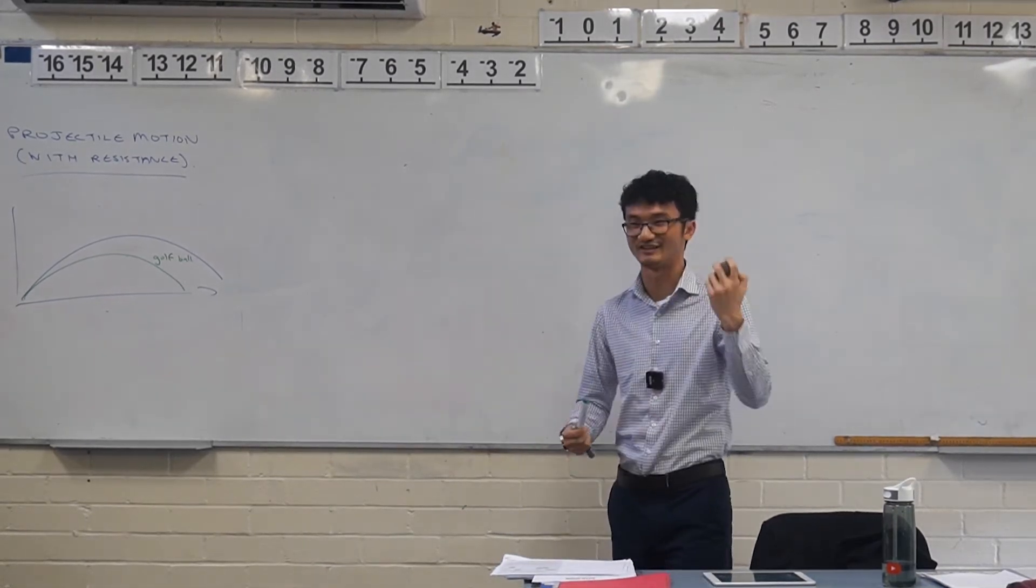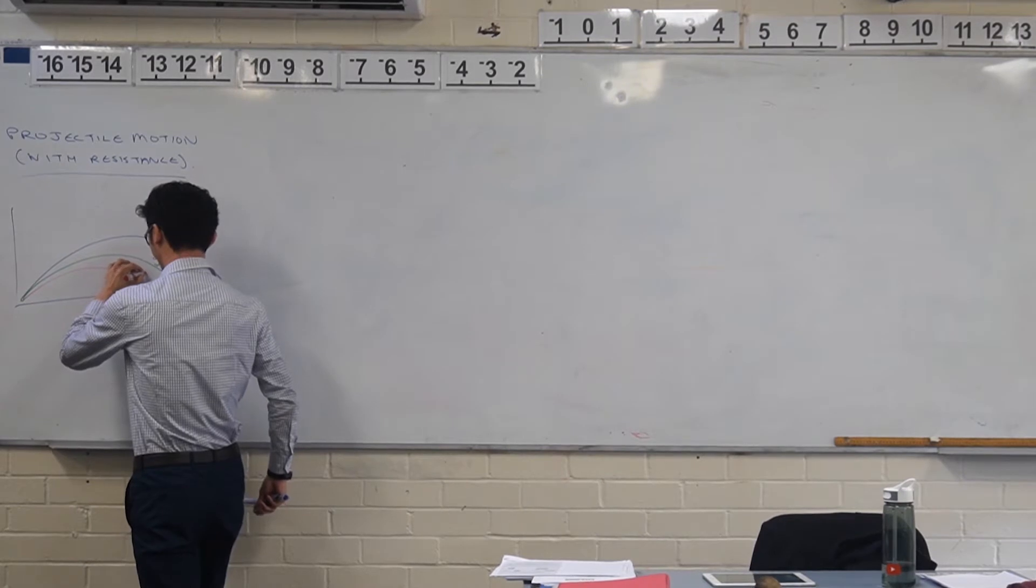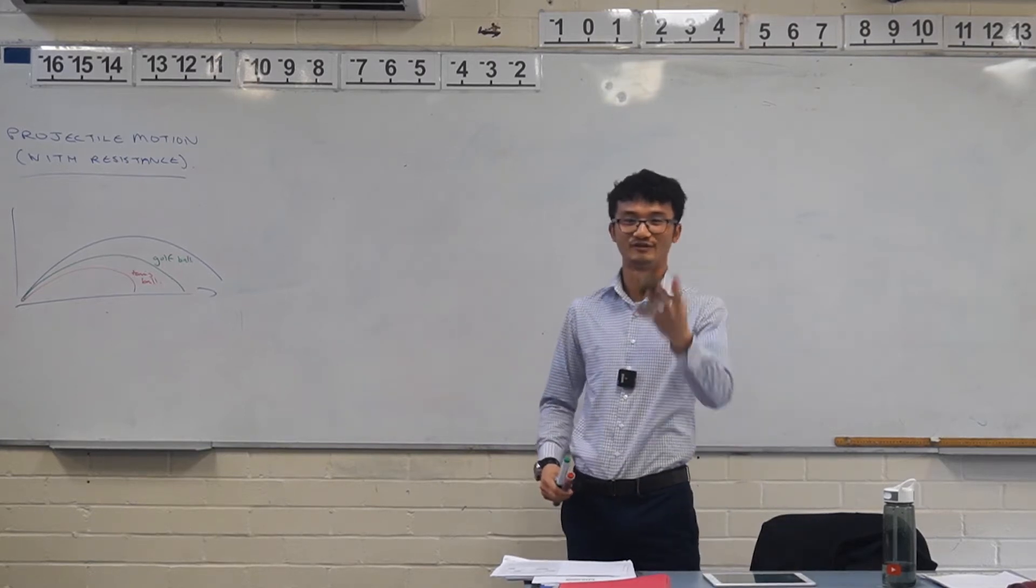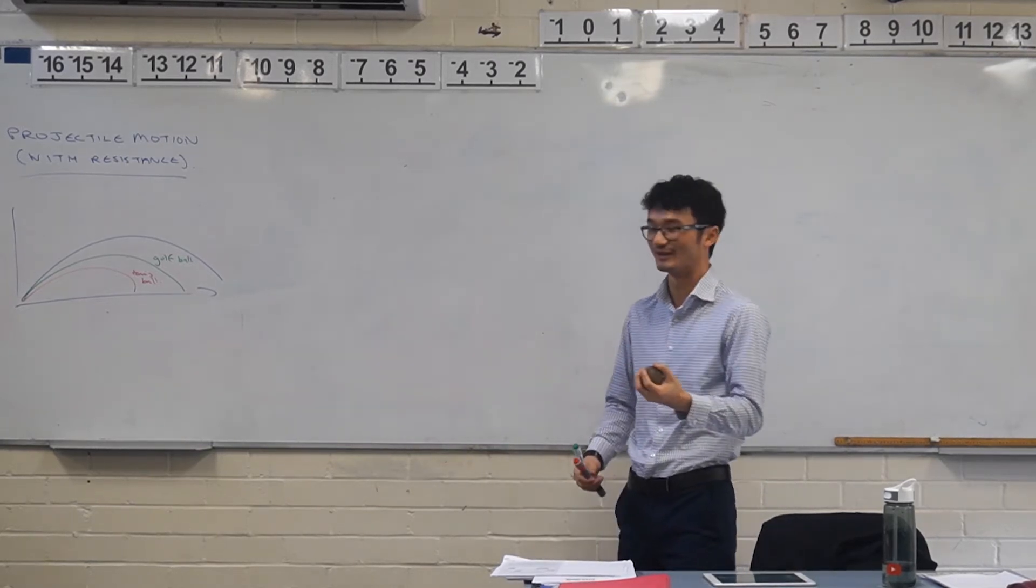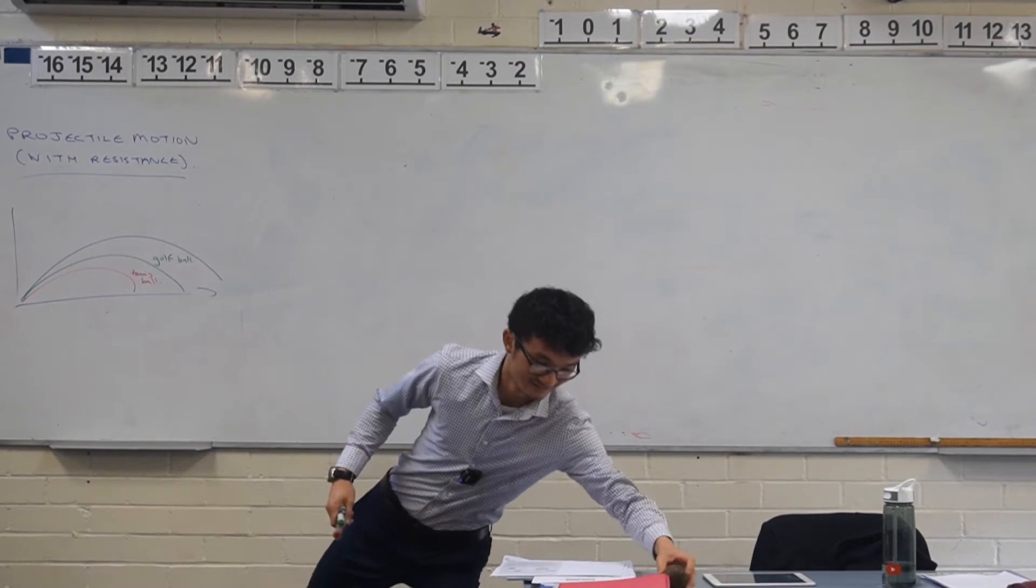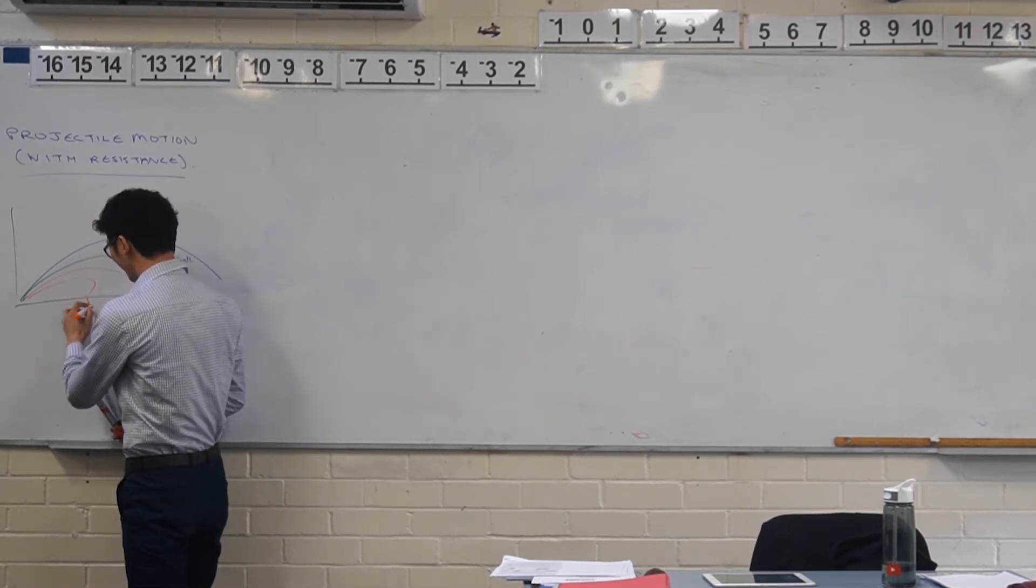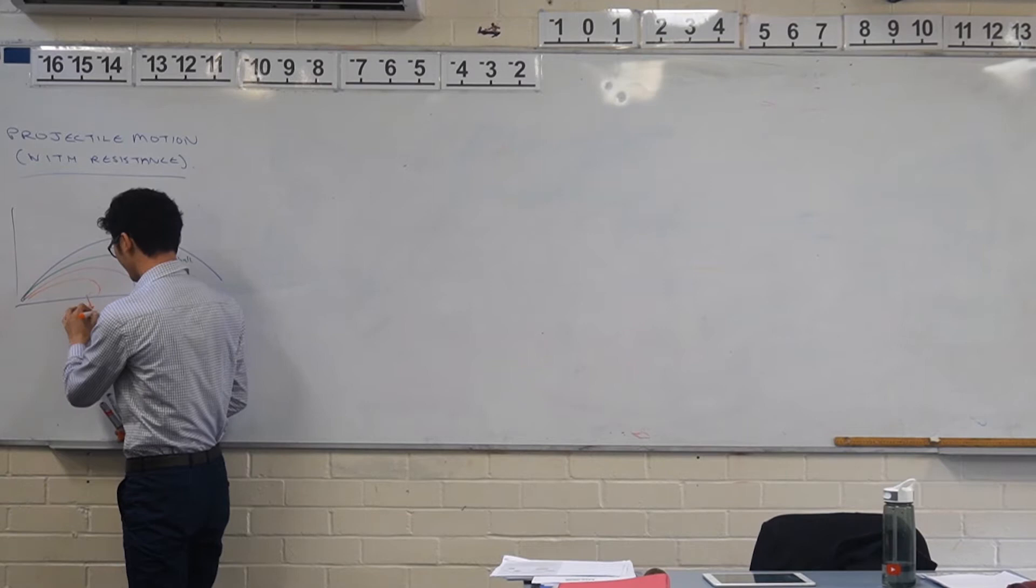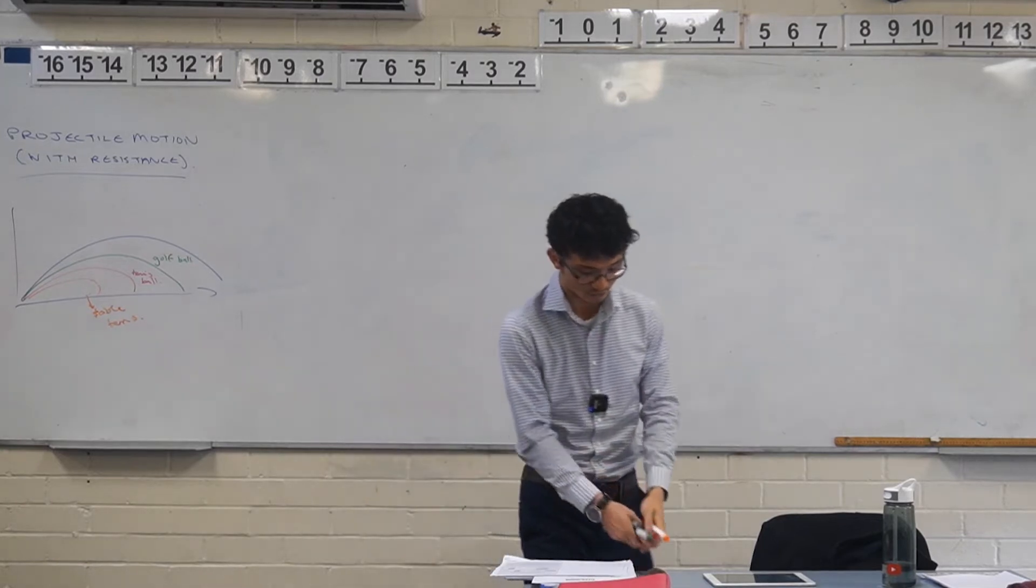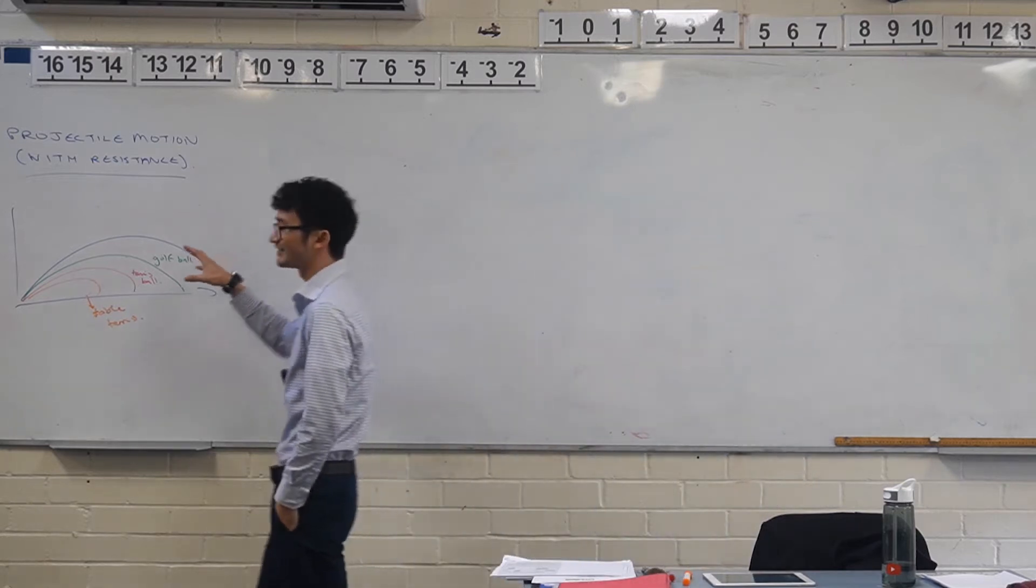And then the next thing, like just in terms of objects that we have available to us, like a tennis ball, and then something with the most resistance, like a table tennis ball. So it's really relying on the surface area, right? As you tend to introduce this factor of resistance, it becomes less like a parabolic shape.